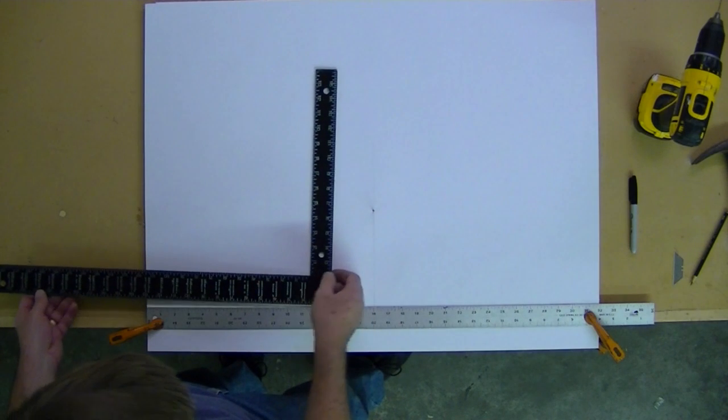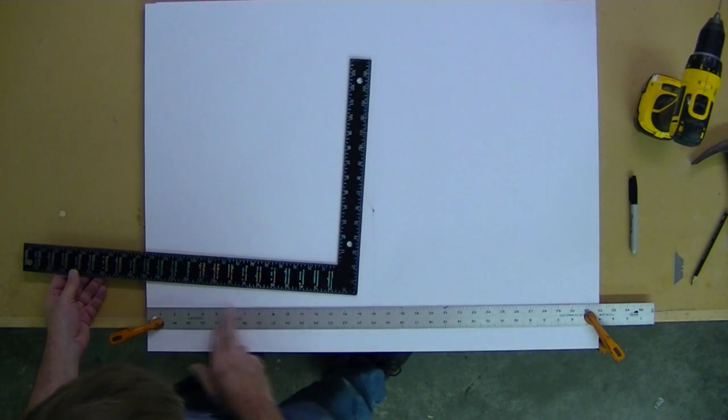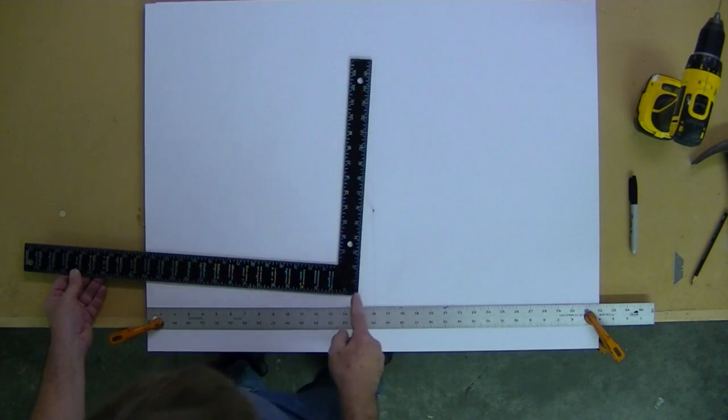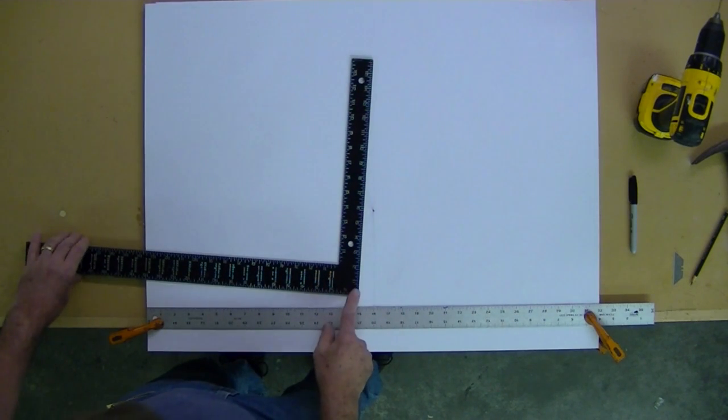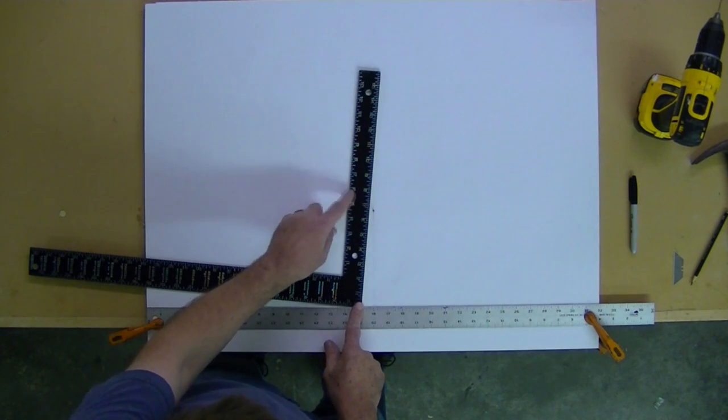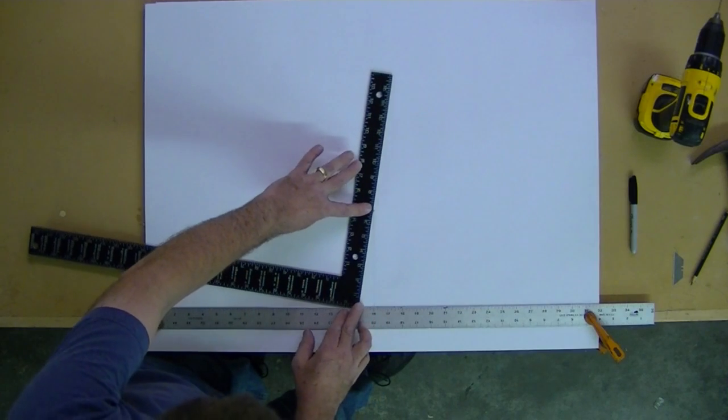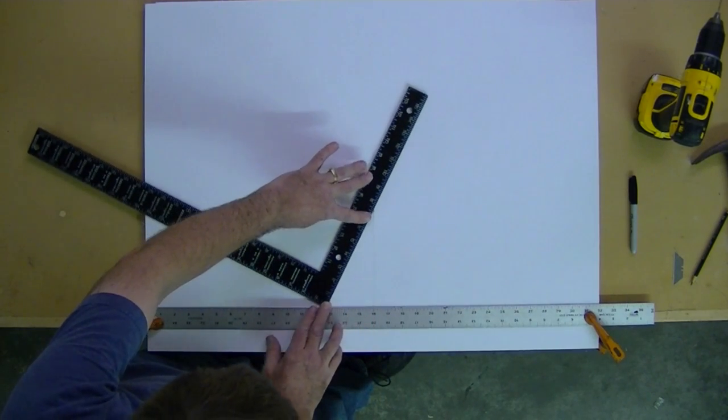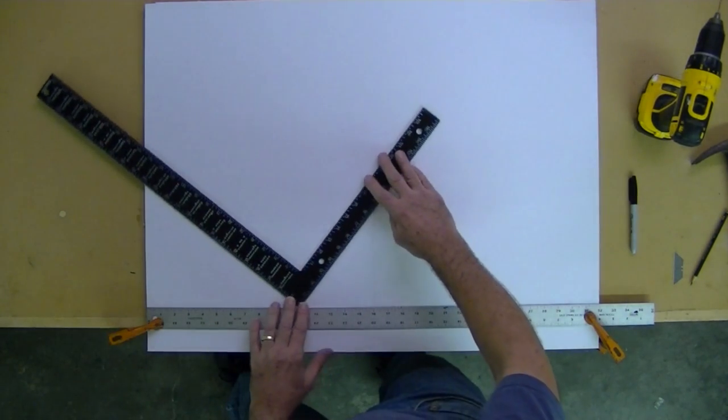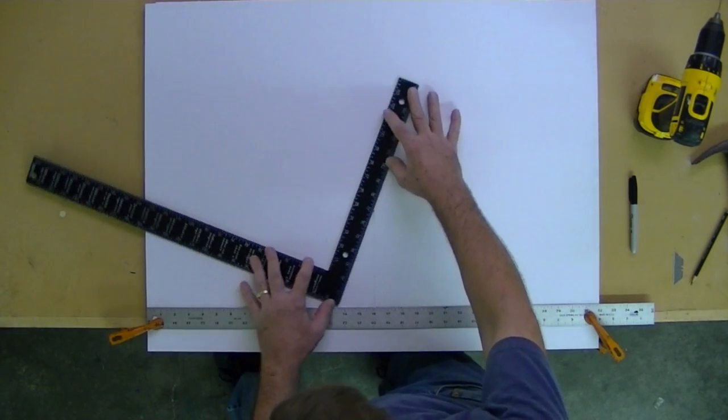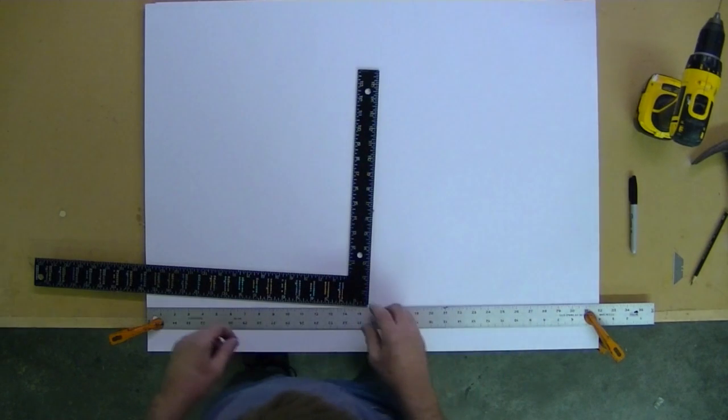So the trick is you pick an increment along the straight edge and you keep the corner of the square in contact with the straight edge and this edge of the square in contact with the nail. And then we'll draw a series of lines along this edge, and what will be left behind is a parabola.